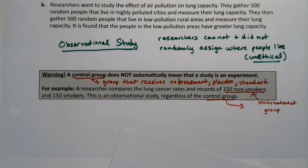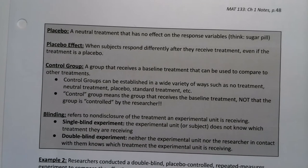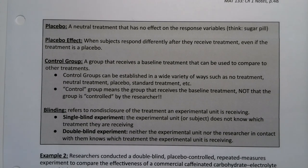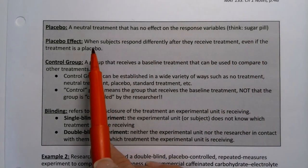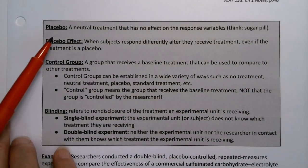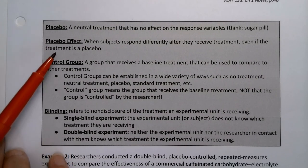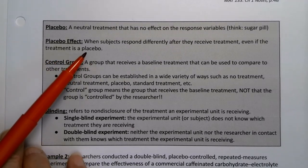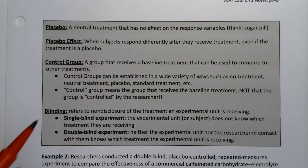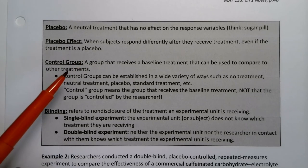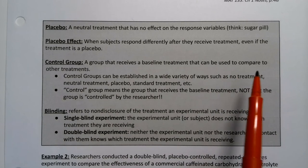A placebo, which you've probably heard before, is a neutral treatment that has no effect on the response variable — think of a sugar pill. A placebo effect is when subjects respond differently after they receive treatment, even if that treatment was neutral. People start feeling better just because they take the sugar pill — they psychologically boost themselves into feeling better. The control group is a group that receives a baseline treatment that can be used to compare to other treatments.